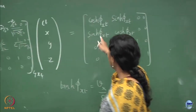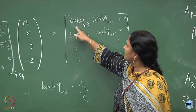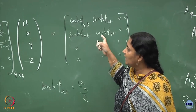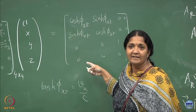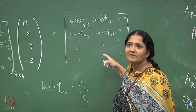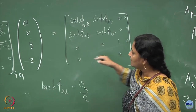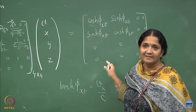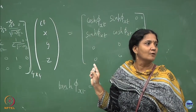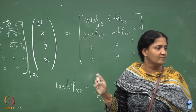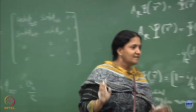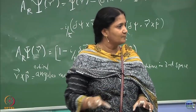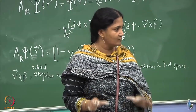For boosting along the x direction it is hyperbolic. Similarly, if you do boosting along the y direction you will write cosh hyperbolic which mixes the y and t, with parameter φ_yt, and similarly for the z direction. Besides this you can also have rotations in the three-dimensional spatial subspace.